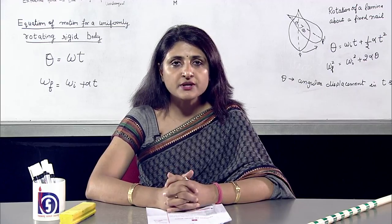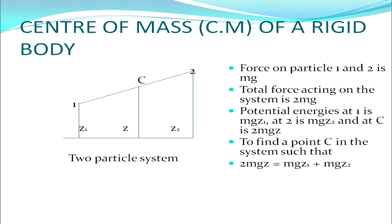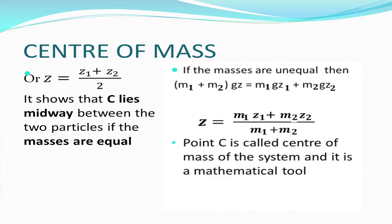Now let's talk about the center of mass of a rigid body. Consider a two-particle system: particle one is at height z1 and particle two is at height z2. There is a point C midway between the two at height z. The force on each particle is mg, so the total force on the system is 2mg. The potential energies are mgz1 at particle one and mgz2 at particle two, while at point C the potential energy is 2mgz. To find point C, we set 2mgz equal to mgz1 plus mgz2.